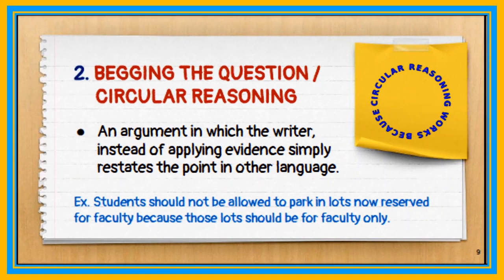The second type of fallacy is begging the question, or circular reasoning. It is a form of argument in which the writer, instead of applying evidence, simply restates the point in other language. For example, a signage saying students should not be allowed to park in lots now reserved for faculty, because lots should be for faculty only. There is no evidence or justification — just mere repetition of the prior statement.